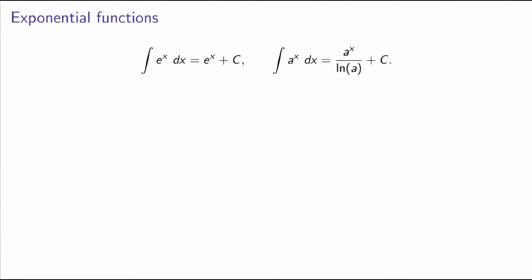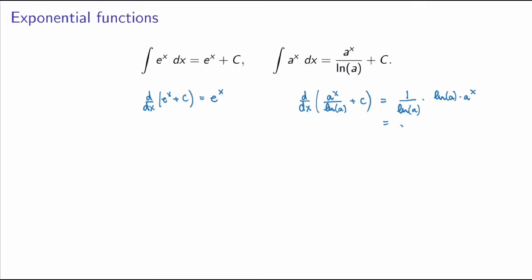For exponential functions: we've seen that the derivative of e to the x is e to the x itself, so the general antiderivative of e to the x is also e to the x plus a constant. For another base, the integral of a to the x is a to the x over the natural log of a plus a constant. This follows by taking the derivative of the right-hand side: I get 1 over ln(a) times ln(a) times a to the x, so I just get a to the x.